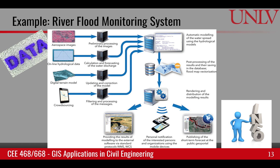Let's look at the example of a flood monitoring system for a river. Here the data is the numbers and characters that come from satellite images, online hydrological data, digital terrain model, and data generated by crowdsourcing.